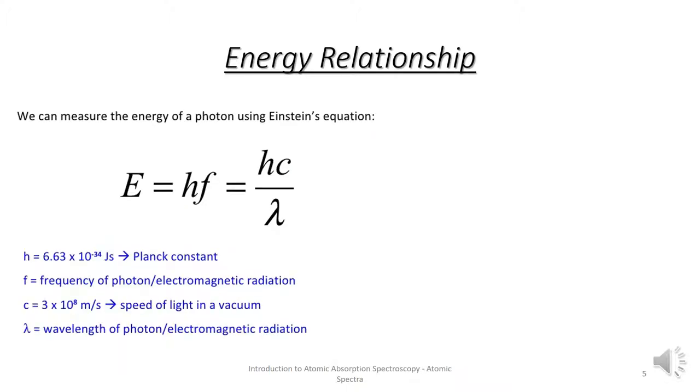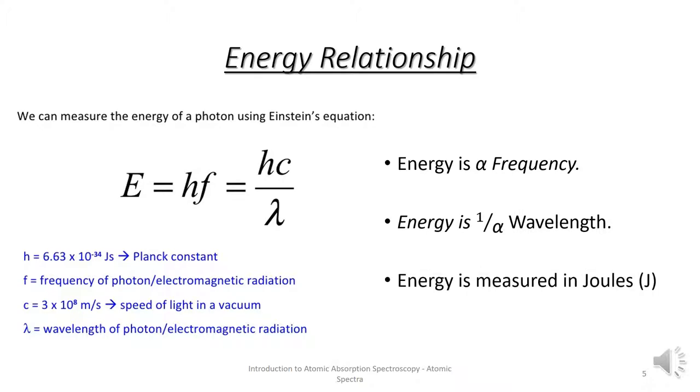Thanks to Einstein, we can measure the energy of a photon using the following equation, where H is Planck's constant, F is the frequency of electromagnetic radiation, C is the speed of light in a vacuum, and lambda is the wavelength. Energy is directly proportional to frequency and inversely proportional to wavelength, and is measured in joules.